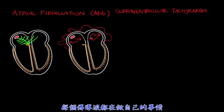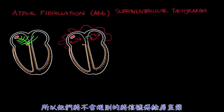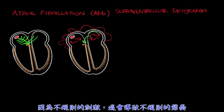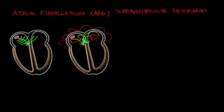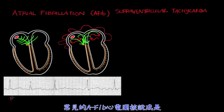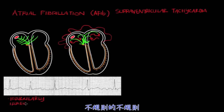Also, the wavelets are doing their own thing, so they're going to be signaling the AV node erratically. This is going to lead to an irregular rhythm because of the irregular stimulation. Classically, the AFib EKG is said to be irregularly irregular.